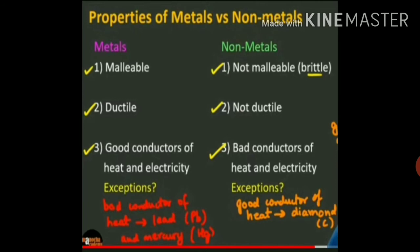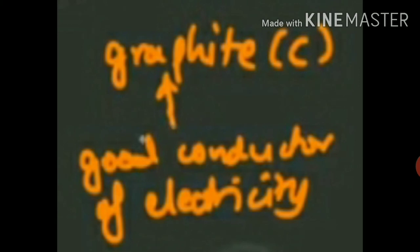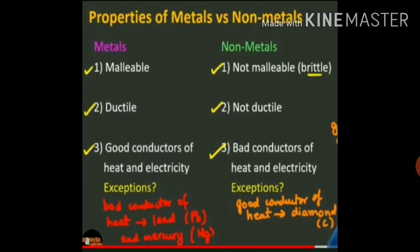We have exceptions in the case of non-metals also. A form of carbon — diamond — is a non-metal which is a good conductor of heat. Another form of carbon — graphite — is a non-metal which is a good conductor of electricity. Being a good conductor of electricity, graphite is used for making electrodes in dry cells. So graphite is a good conductor of electricity and diamond is a good conductor of heat.